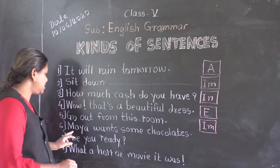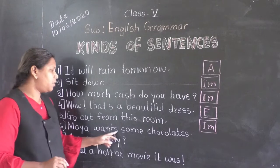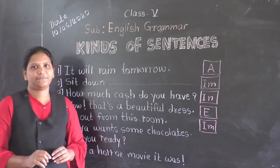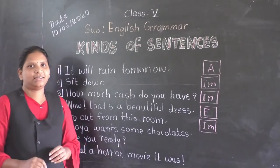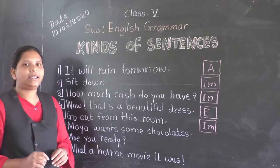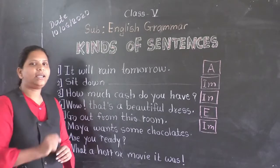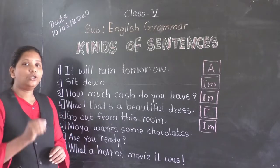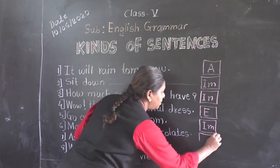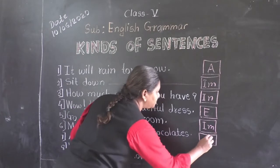Now see the sixth sentence: 'Maya wants some chocolates.' Yes, it is a declarative and assertive sentence, so we will write here E. Are you getting E?